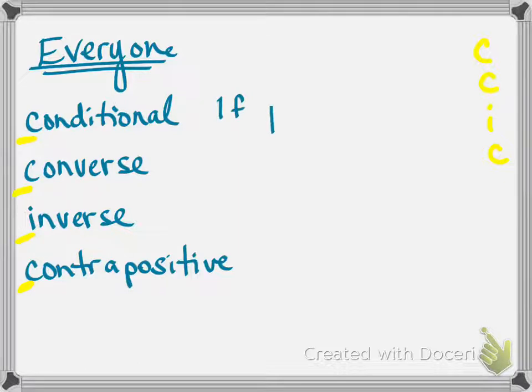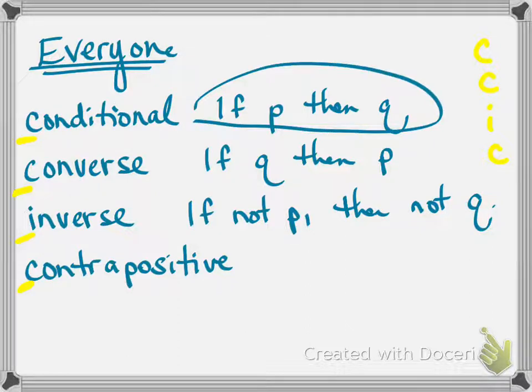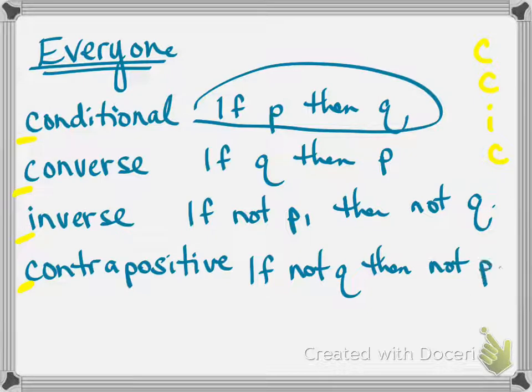The conditional, if P then Q. The converse switches, if Q then P. The inverse negates, if not P then not Q. And the contrapositive switches and negates, and each one of those is going back to the original. So it switches and negates, if not Q then not P. It's amazing how quickly you can write that down, and we'll practice that Monday. If P then Q. If Q then P. If not P then not Q. If not Q then not P.